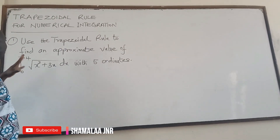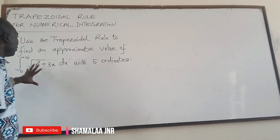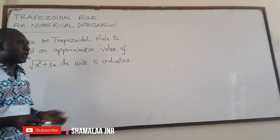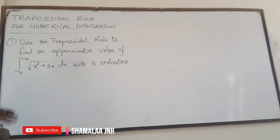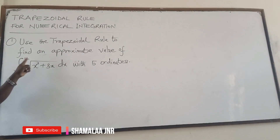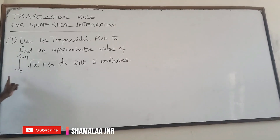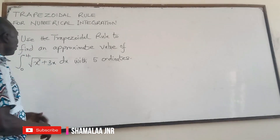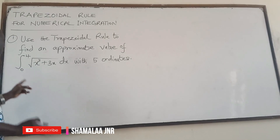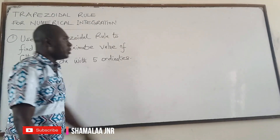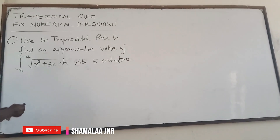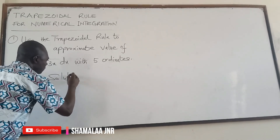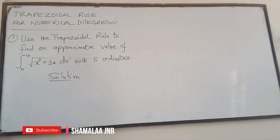To look at the trapezoidal rule for numerical integration, let's look at this question. In the course of solving the question, all the concepts you need to understand the topic will be given to you. The question is: use the trapezoidal rule to find an approximate value of this definite integral with five ordinates.